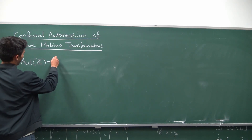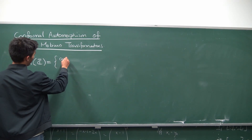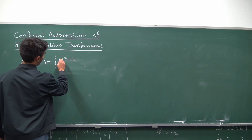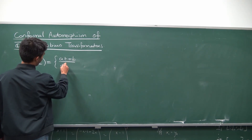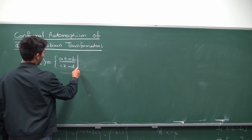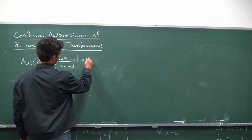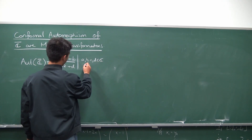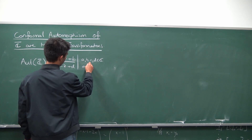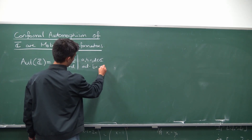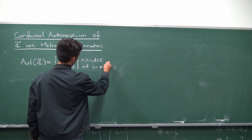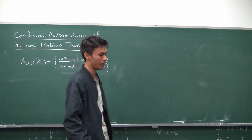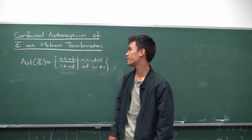We're going to prove today that Aut(C-bar) is precisely the set of Möbius transformations — something like (az + b) / (cz + d), where a, b, c, d are all complex numbers, and you also require that ad minus bc is not equal to zero. Otherwise you're just going to have a constant, and constants aren't bijective.